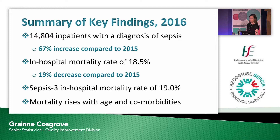To summarise: we've had a 67% increase in 2016 in the number of documented cases, no doubt related to the tremendous work of Vida and the sepsis programme and the HPO in improving the recognition, coding and documentation of sepsis. Our in-hospital mortality rate was 18.5% — a 19% decrease on 2015. Excluding SIRS of infectious origin without acute organ failure and looking at our Sepsis-3 in-hospital mortality rate, it was 19%. We know that mortality rate rises with age and with comorbidities. Thank you very much for listening and we'd be happy to take any questions.